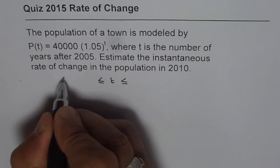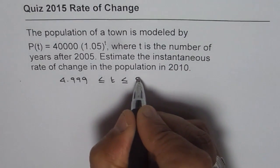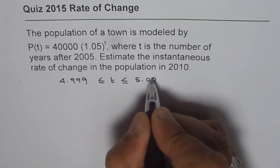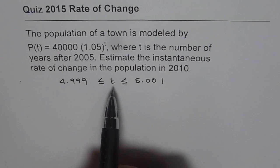which will be, let's say, 4.999 to 5.001. So that interval will give us the instantaneous rate of change at t equals 5.